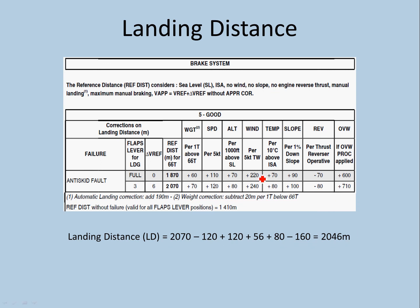This is the landing distance for the anti-skid fault, which had the higher reference distance of the two faults. So even if you have 3 or 4 faults, you calculate for the highest reference distance among them.